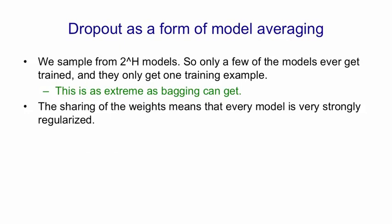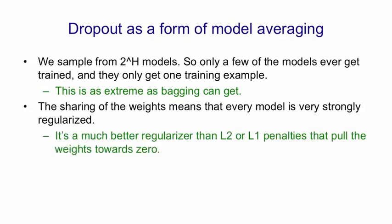The sharing of the weights between all the models means that each model is very strongly regularized by the others. And this is a much better regularizer than things like L2 or L1 penalties. Those penalties pull the weights towards zero. By sharing weights with other models, a model gets regularized by something that's going to tend to pull the weights towards the correct value.